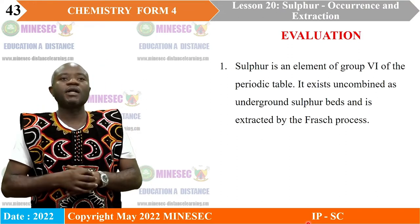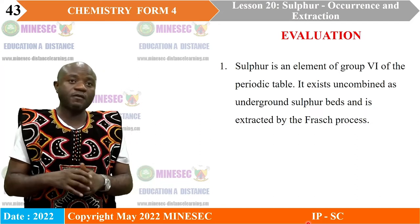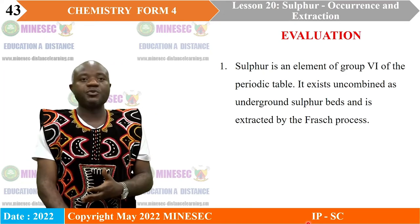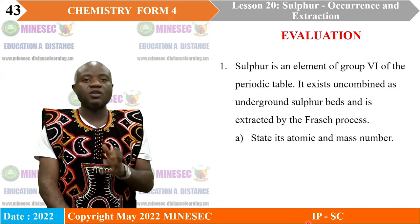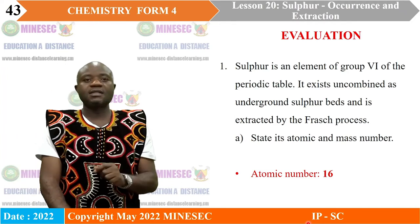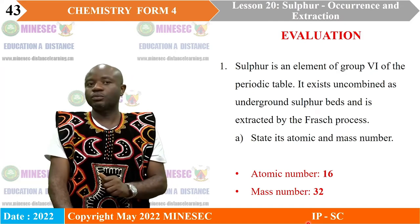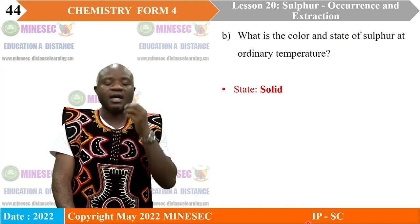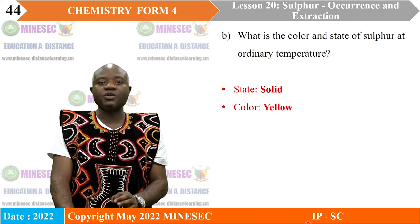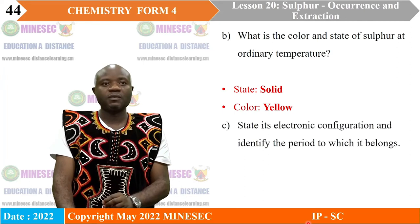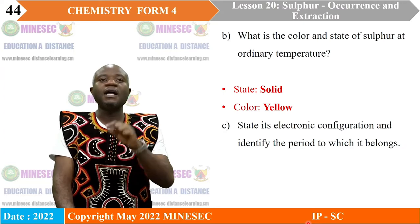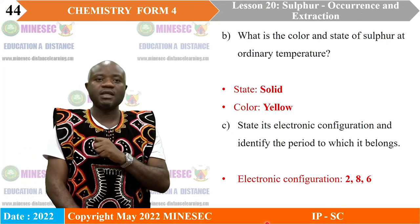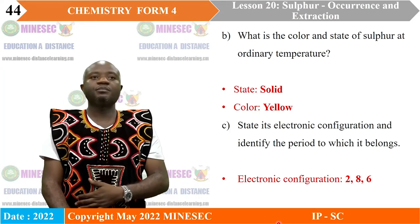Evaluation. Question number one: Sulfur is an element of group six of the periodic table. It exists uncombined as an underground sulfur bed and is extracted by the Frasch process. A. State its atomic and mass numbers. The atomic number of sulfur is 16 and its mass number is 32. B. What is the color and state of sulfur at ordinary temperature? C. State the electronic configuration of sulfur and identify the period to which it belongs. Sulfur has electronic configuration 2, 8, 6; thus it belongs to period three of the periodic table.